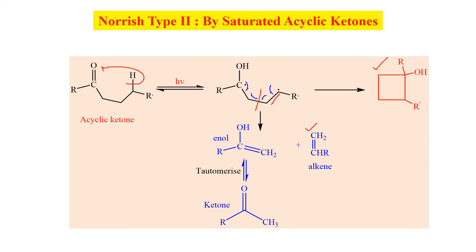The possibility of cyclobutanol is very low as four-membered rings are unstable. So the ketone and alkene will be the major products.